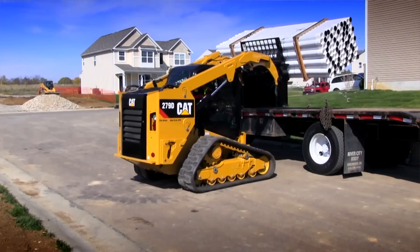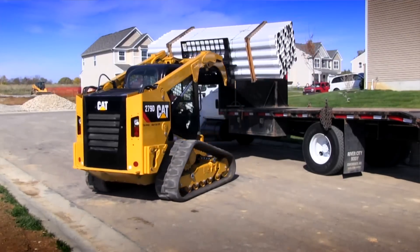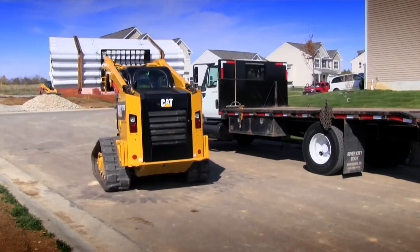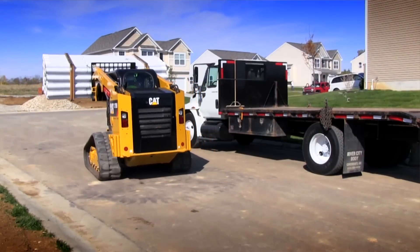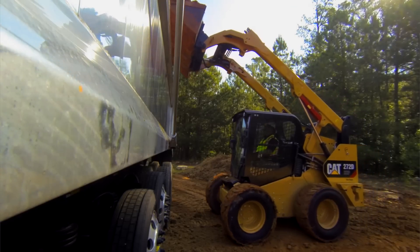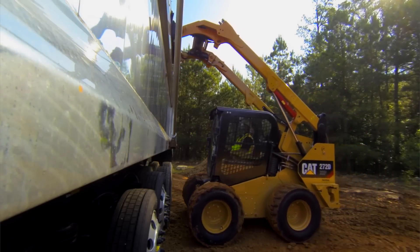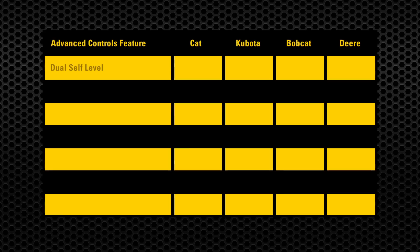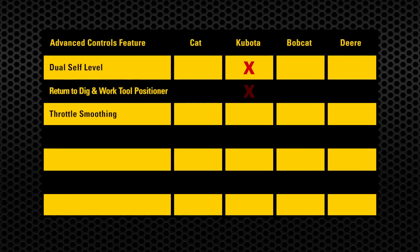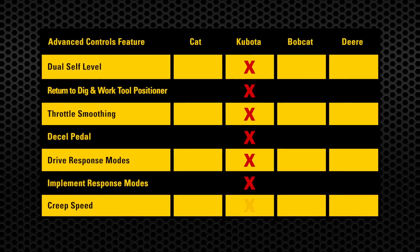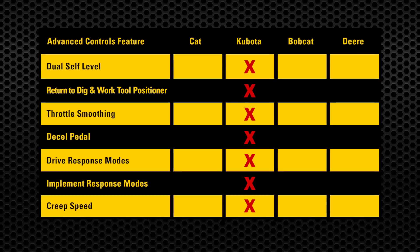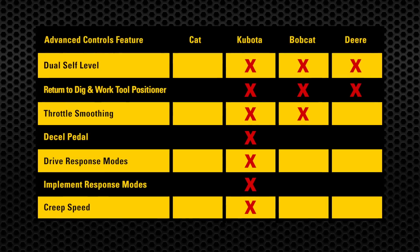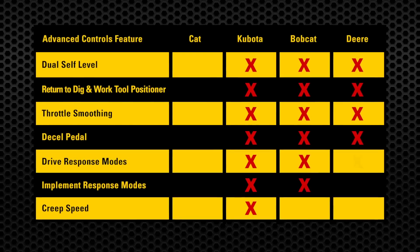The standard electro-hydraulic controls make every CAT skid steer or compact track loader more adaptive to a wide array of work cycles and can help operators be more efficient and comfortable. The competition only offers a portion of what is available from Caterpillar. Kubota doesn't offer electronic controls, so they're unable to offer these valuable features. For Bobcat and Deere machines, their standard controls also don't allow for such features.